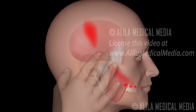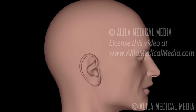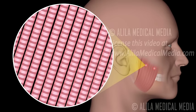Trigger points are developed as a result of muscle overuse. Commonly, the muscles of chewing or mastication are overworked when patients excessively clench or grind their teeth unconsciously during sleep. The medical term for this condition is nocturnal bruxism.